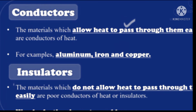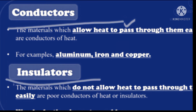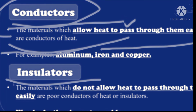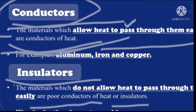Now we move to the next topic: conductor and insulator. A conductor is a material which allows heat to pass through it easily — such substances are called conductors of heat. Substances that do not allow heat energy to flow through them easily are called poor conductors of heat or insulators.